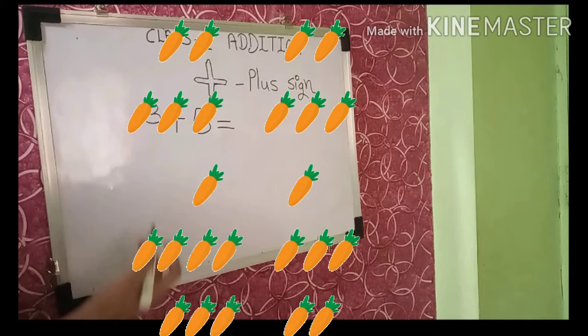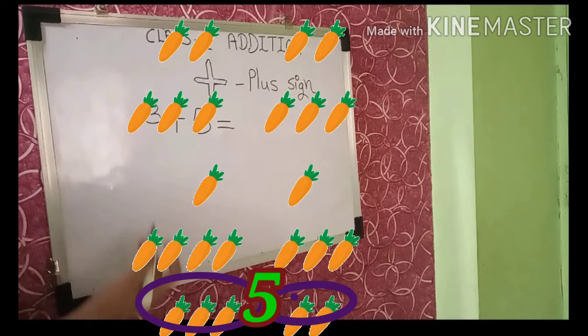Next we have three and two more. We are adding — three plus two. Three added to two, we will get five.